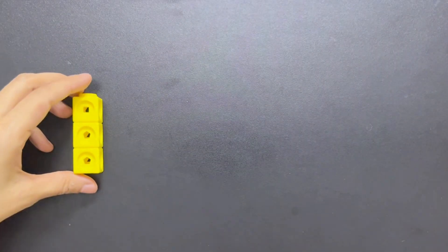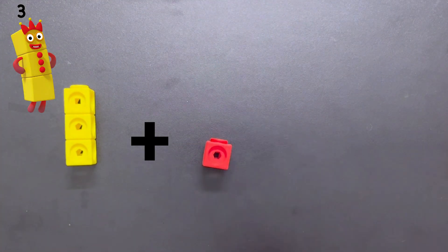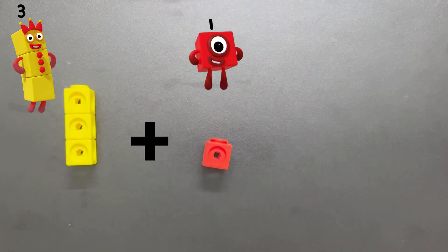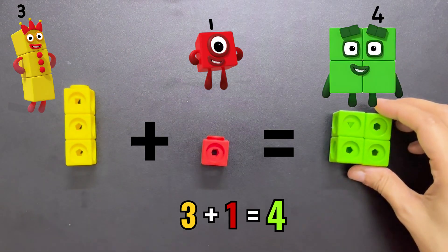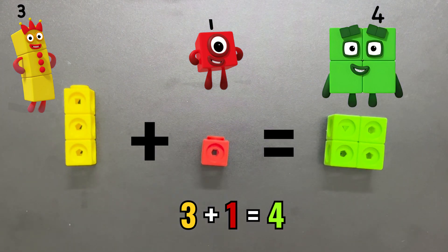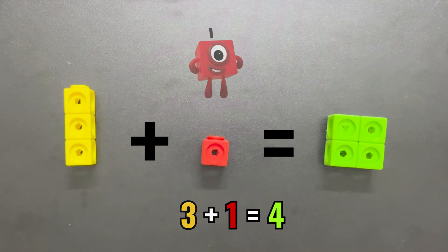Three plus one equals four. Number Four is a strong figure who is neat, tidy, and proud to be a square—two blocks wide and two blocks tall. He is organized, logical, and loves structure.